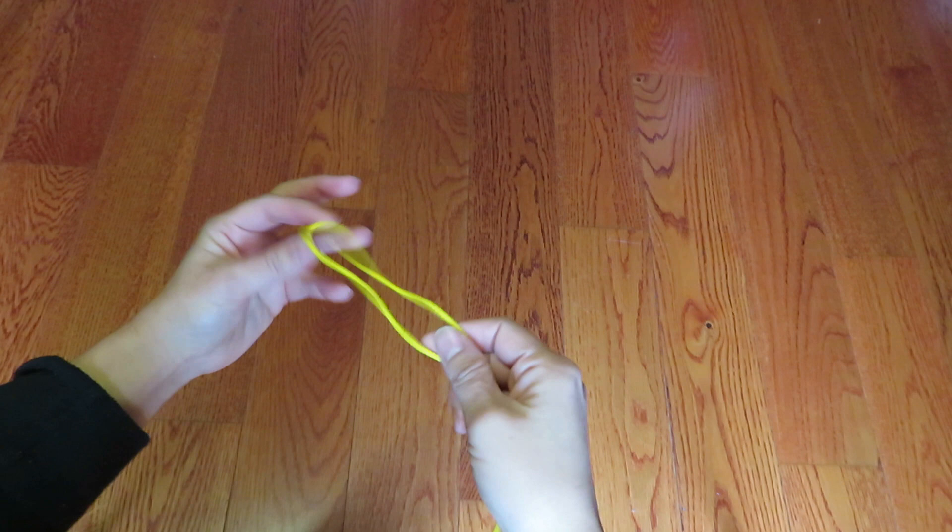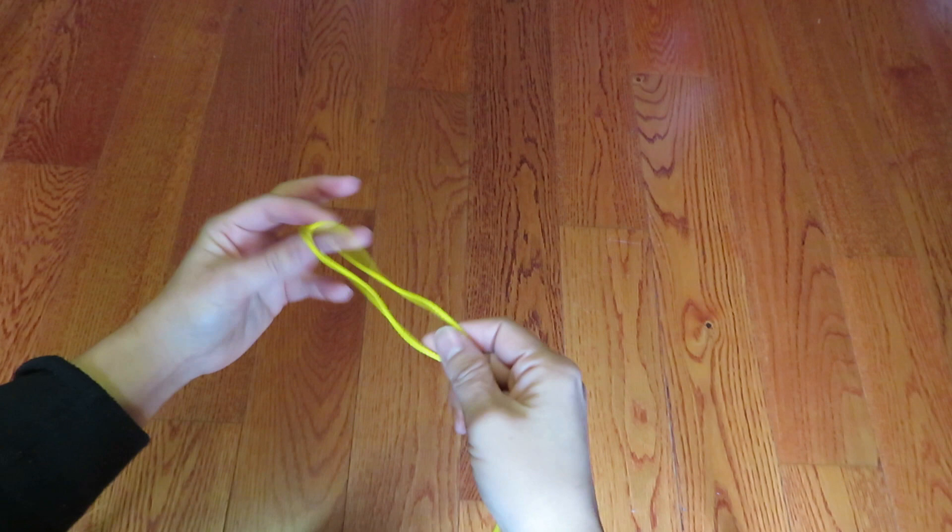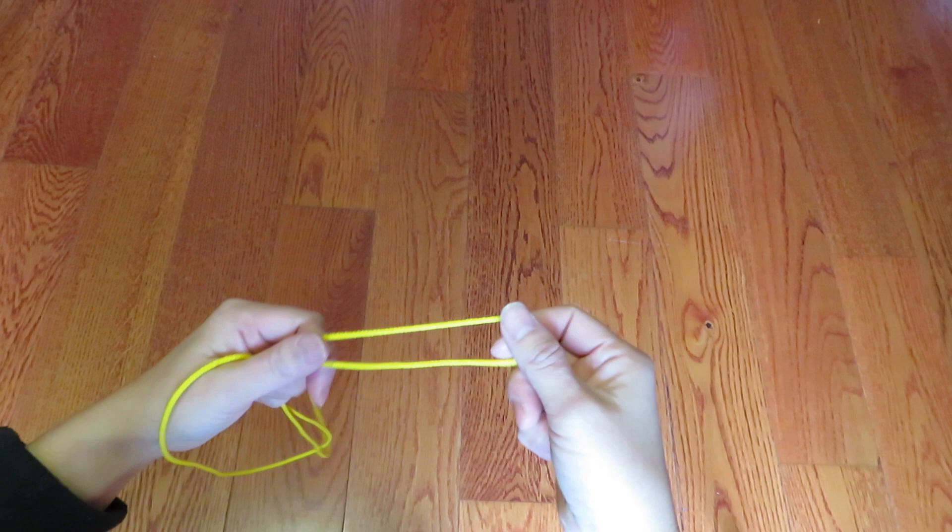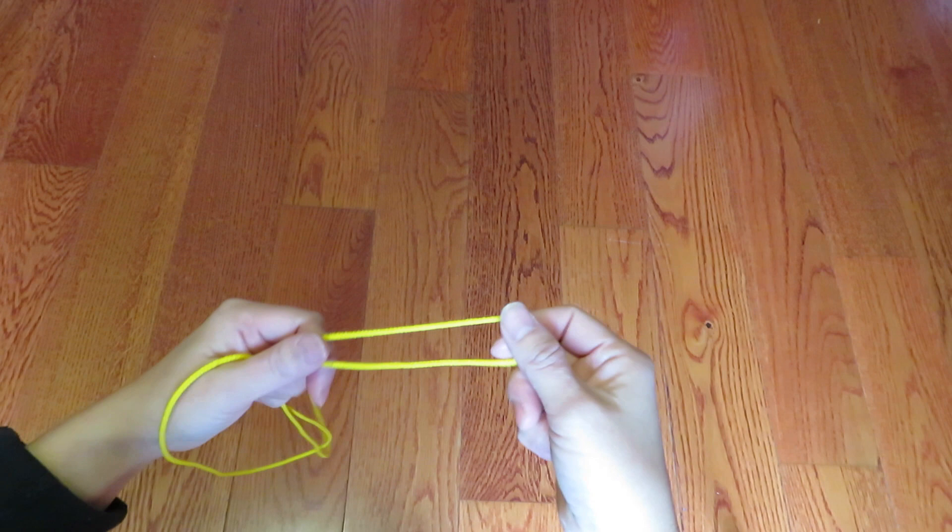Now, let's start. Alright. On the left hand, hook the one end of the loop onto the thumb and pinky, and then bring it to the right hand side, and hook onto the thumb and pinky like this.